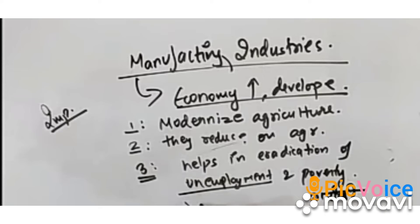Manufacturing industries not only help in modernizing agriculture but they also reduce the heavy dependence of people on agriculture by providing them jobs in the secondary and tertiary sectors. Industrial development is a precondition for eradication of unemployment and poverty. During the time India gained independence and one century before, people depended only on agriculture, causing widespread poverty and unemployment. With manufacturing industries, this unemployment has been reduced to a great level.